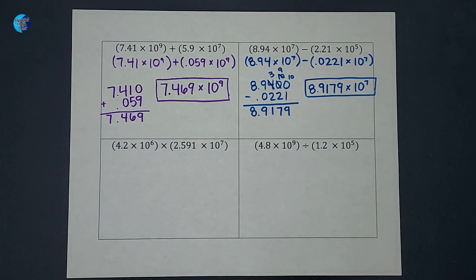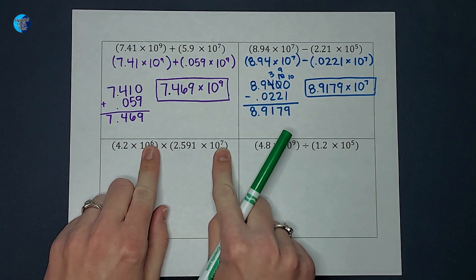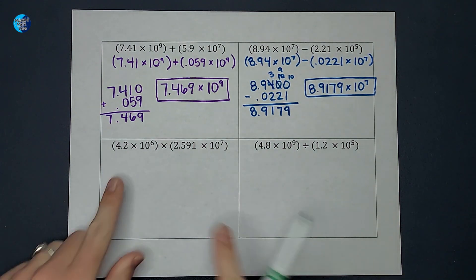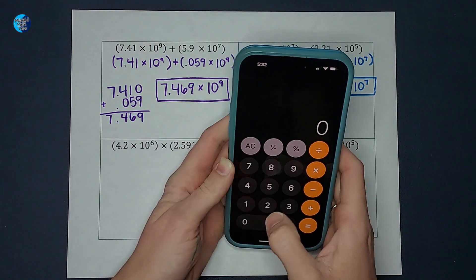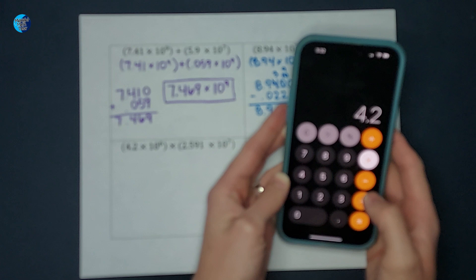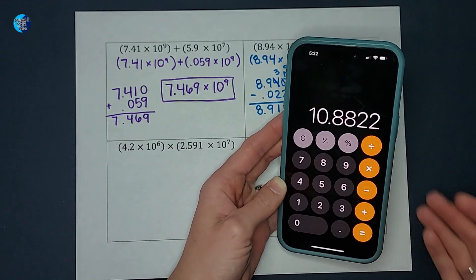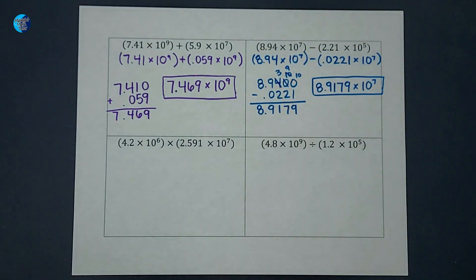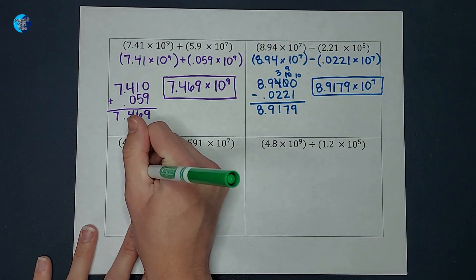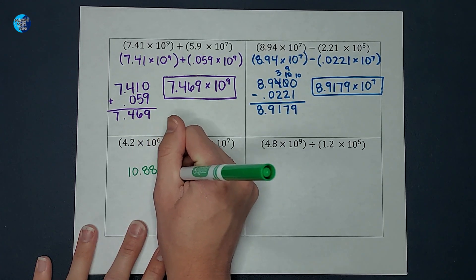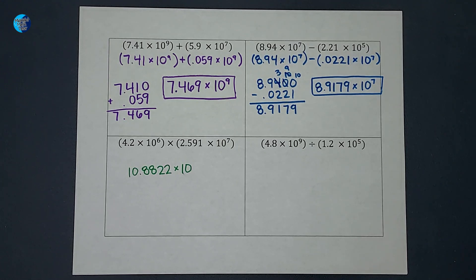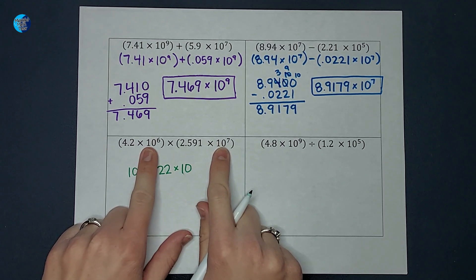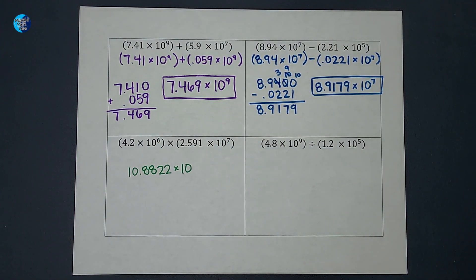Now we're going to multiply. The cool thing about multiplying is the exponents don't have to match — I can just multiply them. I'll do 4.2 times 2.591 on my calculator, which gives me 10.8822. When multiplying numbers with exponents that have the same base — both ten — I can just add the exponents. So 6 plus 7 gives me 13, making it 10.8822 times 10 to the thirteenth.